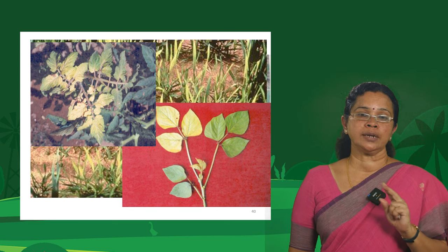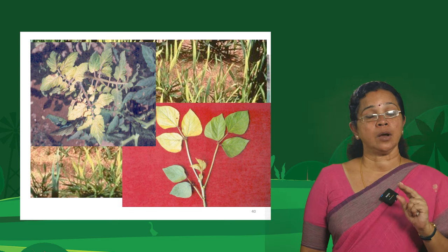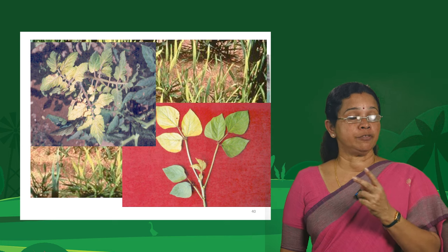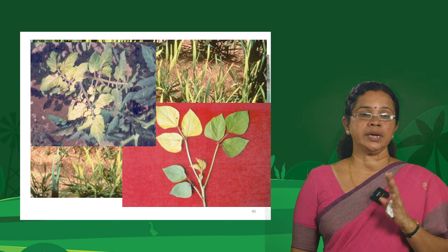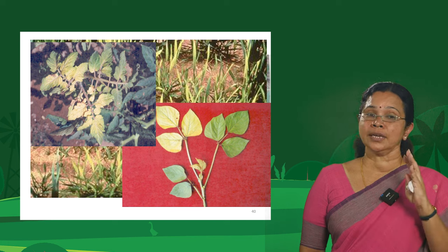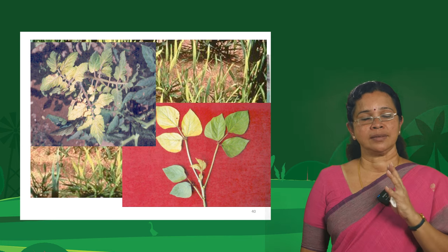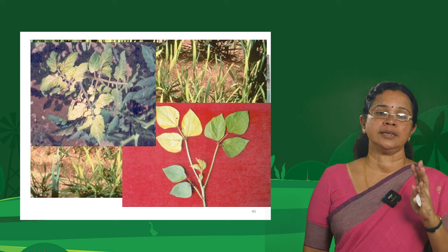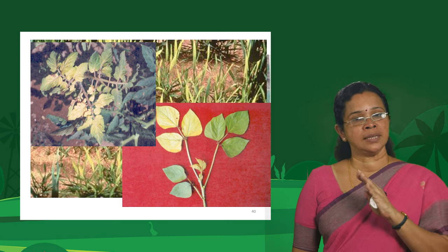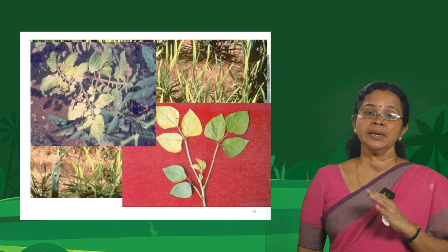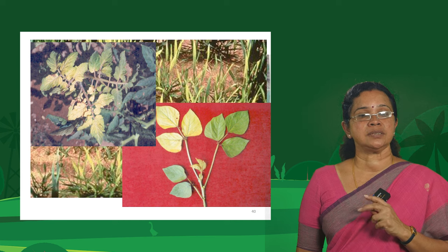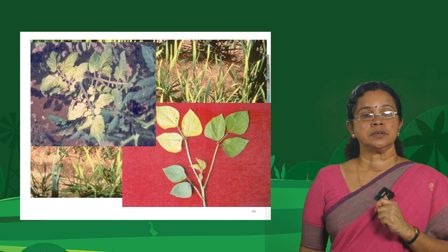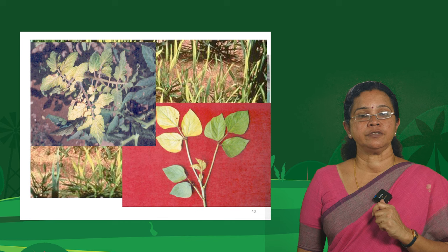How can you identify the difference between nitrogen and sulphur deficiency? Nitrogen also shows yellowing. But in the case of nitrogen, that yellowing compulsorily starts in the older leaves, whereas in the case of sulphur, it is either the younger leaves or the middle leaves turning pale yellow. You can see sulphur deficiency in legumes and vegetables in these pictures.